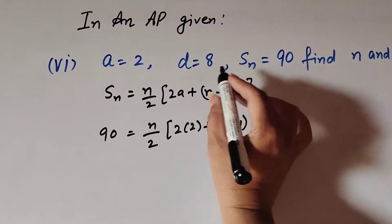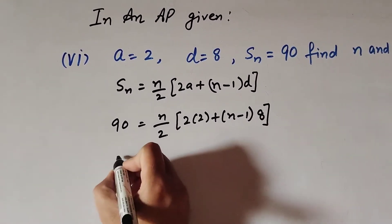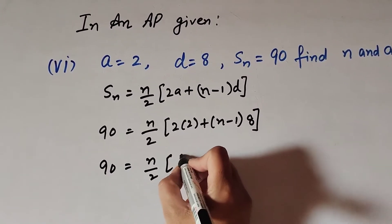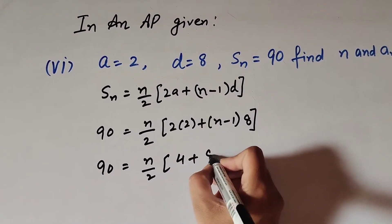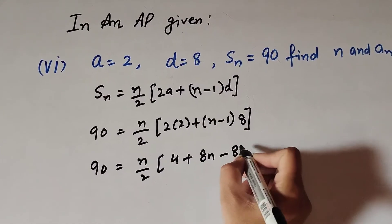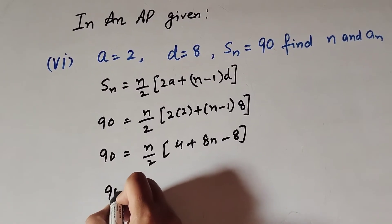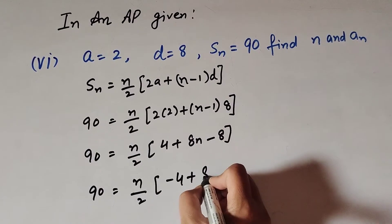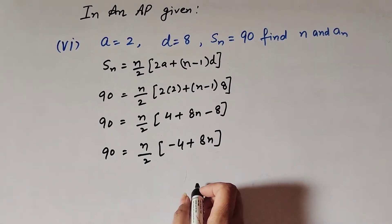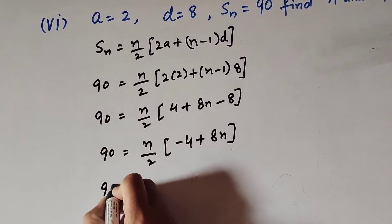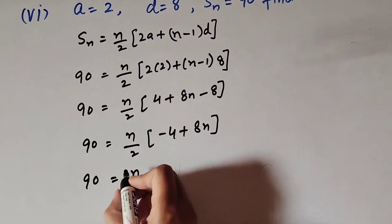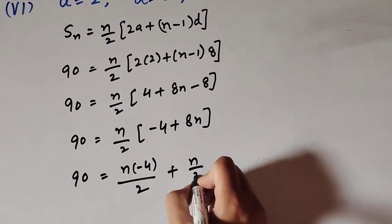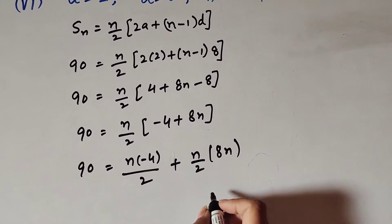So 90 equals n over 2 into 2 multiplied by 2 is 4, plus n minus 1 multiplied by d which is 8. That gives 90 equals n over 2 into 4 plus 8n minus 8. Simplifying inside the bracket: 4 minus 8 equals minus 4, so we get 90 equals n over 2 into minus 4 plus 8n. Separating terms: n over 2 times minus 4 plus n over 2 times 8n.